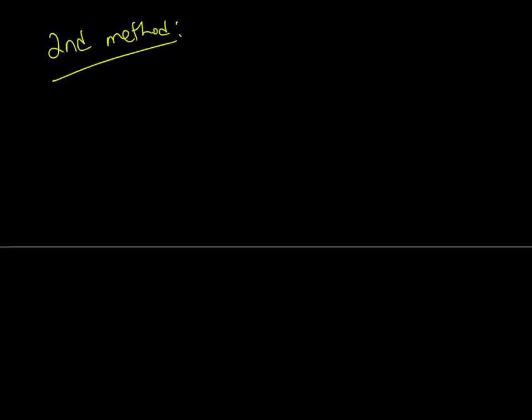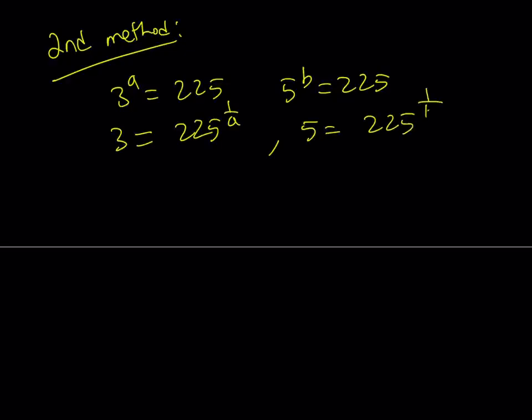We're going to be using the expression. So we have 3 to the power a is 225, and 5 to the power b is 225. I'm going to raise both sides to the power 1 over a. So from here we get 3 equals 225 to the power 1 over a, and 5 equals 225 to the power 1 over b.